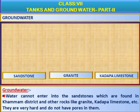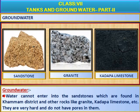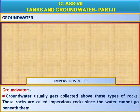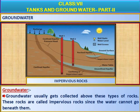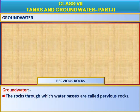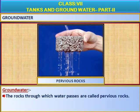Water cannot enter into sandstones, which are found in Kamam district, and other rocks like granite, kadapa, limestone, etc. They are very hard and do not have pores in them. Groundwater usually gets collected above these types of rocks. These rocks are called impervious rocks since water cannot go beneath them. The rocks through which water passes are called pervious rocks.